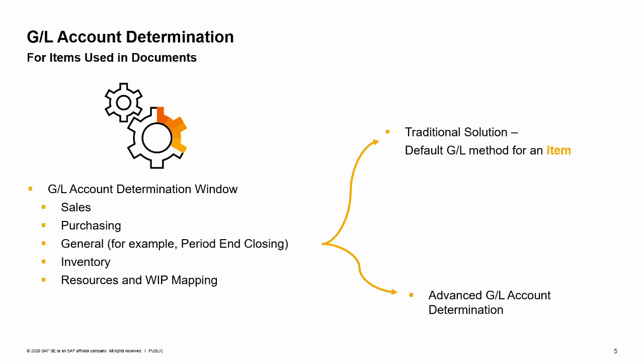When items are used in the transactions, there are two options for account determination. In the traditional solution, the system looks for the default accounts based on the account determination set in the item master data. Alternatively, you can work with the advanced solution for account determination. The advanced solution provides a centralized matrix to determine rules for assigning GL accounts in journal entries according to a predefined, closed list of criteria. Both options are based on the GL account determination window.